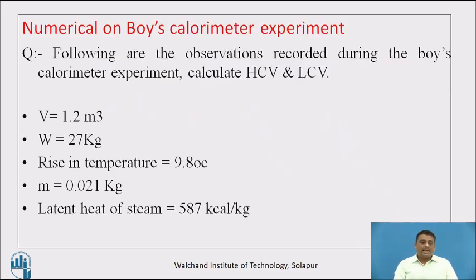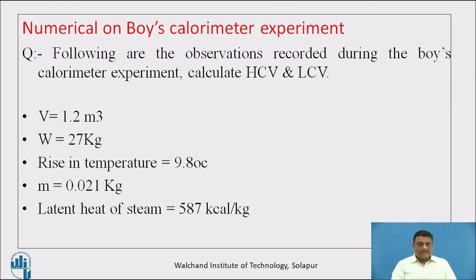This is the second numerical based on the Boys calorimeter experiment. Following are the observations recorded: calculate HCV and LCV. Volume of gas burned (V) = 1.2 m³; mass of water used for cooling (W) = 27 kg; rise in temperature = 9.8°C; mass of steam condensed (m) = 0.021 kg; latent heat of steam = 587 kcal/kg.